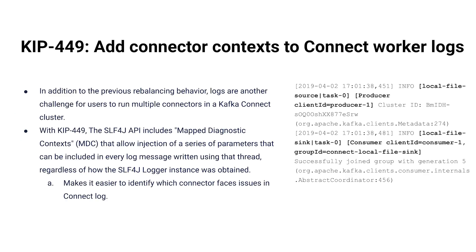KIP 449 adds connector contexts to the log. There are a few different threads and thread pools involved in Kafka Connect activity, all emitting logging data asynchronously, so untangling the logs can be painful since messages aren't necessarily in the order you want. KIP 449 adds context — as you can see on the slide — telling you about the task, the connector, and what's going on, so you can string those log messages together in a reasonable way.